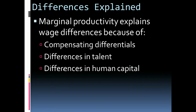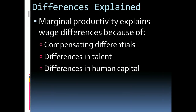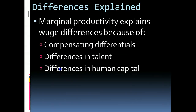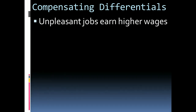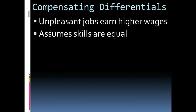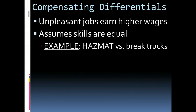We look at three different reasons. One is called compensating differentials. Another is looking at the differences in talent. And the third reason why we see differences in wages is that there are differences in human capital. When we talk about compensating differentials, we're talking about the fact that unpleasant or dangerous jobs generally earn higher wages than less dangerous jobs. We would assume that the skills for doing the jobs are basically the same, but those who do the more unpleasant jobs add a little bit more value and therefore deserve a higher wage.